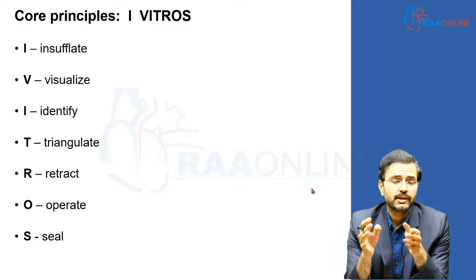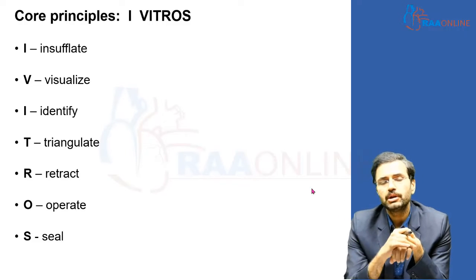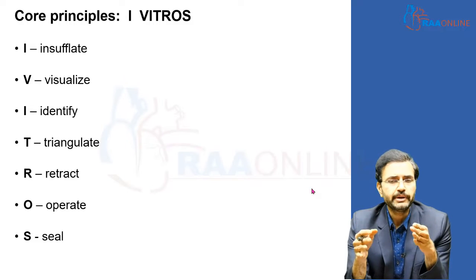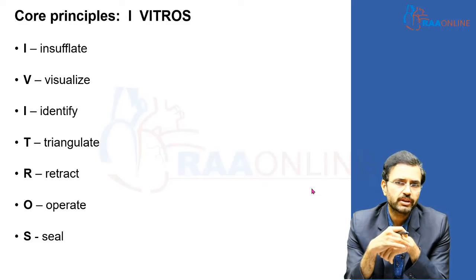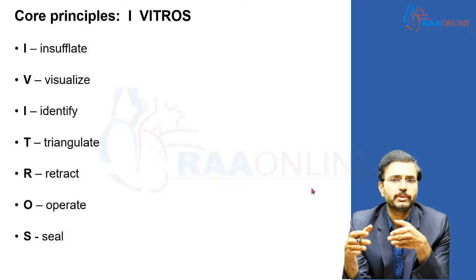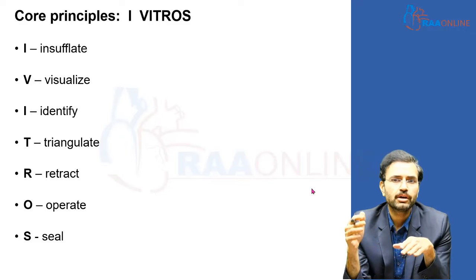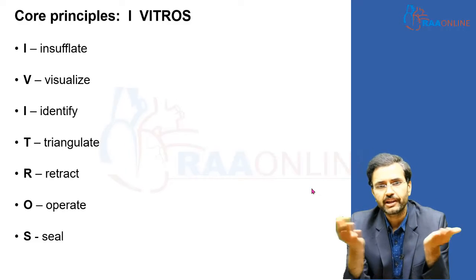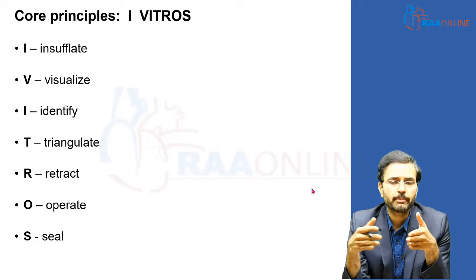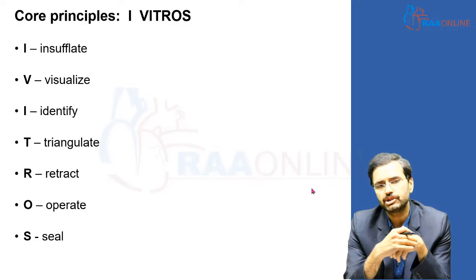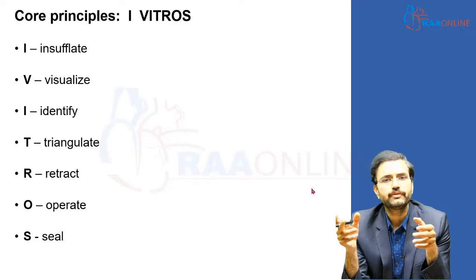I is to identify the area of interest and the organ that is to be operated upon. T is to triangulate and position your ports and instruments such that they do not interfere with each other — instruments should not be touching or making undue contact with each other, and should facilitate adequate motion without much hindrance.